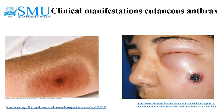Patients often have a history of occupational contact with animals or animal products. The most common areas of exposure are the head, neck, and extremities, though any area can be involved. Pathogenic endospores are introduced subcutaneously through a cut or abrasion, with a few case reports of transmission by insect bites after the insect fed on an infected carcass.